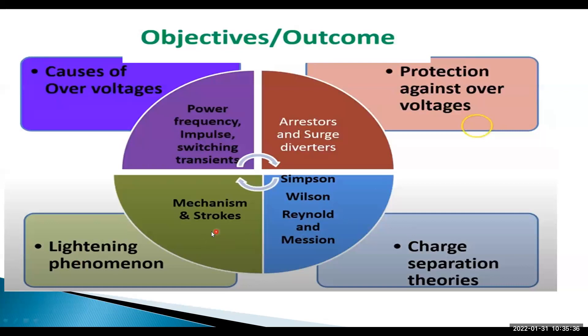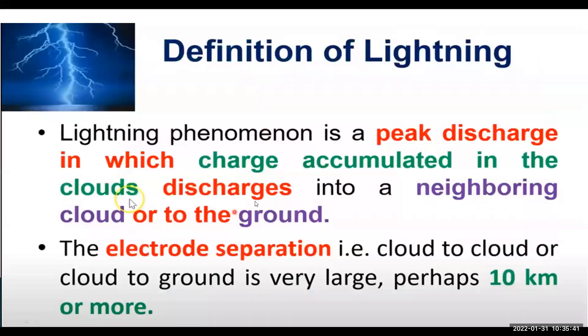Lightning phenomena - that is called mechanism of lightning strokes. Lightning phenomena is a peak discharge in which the discharge accumulated in the clouds discharges into the neighboring cloud or to the ground. Lightning phenomena takes place cloud to ground, cloud to cloud, and cloud to air. The electrode separation - that means cloud distance - is very large, approximately in the range of 10 kilometers or above.